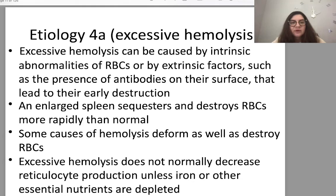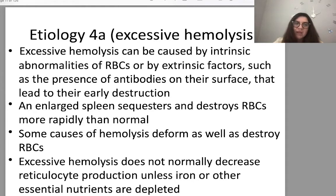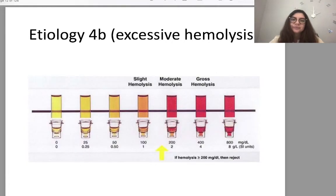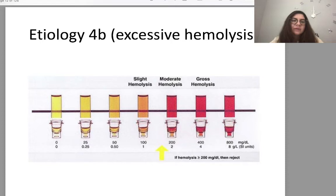Excessive hemolysis can be caused by intrinsic abnormalities of red blood cells or by extrinsic factors such as antibodies on their surface that lead to early destruction. An enlarged spleen sequesters and destroys red blood cells more rapidly than normal. Some causes of hemolysis deform as well as destroy red blood cells. Excessive hemolysis does not normally decrease reticulocyte production unless iron or other essential nutrients are depleted. You can see levels of hemolysis during laboratory tests according to velocity and color of the analysis.